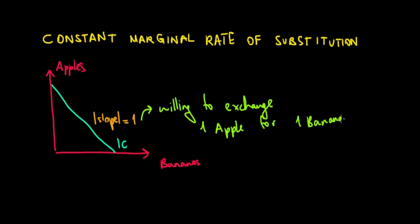Notice that we're saying the slope, the MRS, which is the slope of the indifference curve, is constant. Constant means this slope is going to be 1 across the entire line. So no matter how many apples and bananas we have, either at this point or at this point or at that point, we're willing always to exchange 1 for 1.